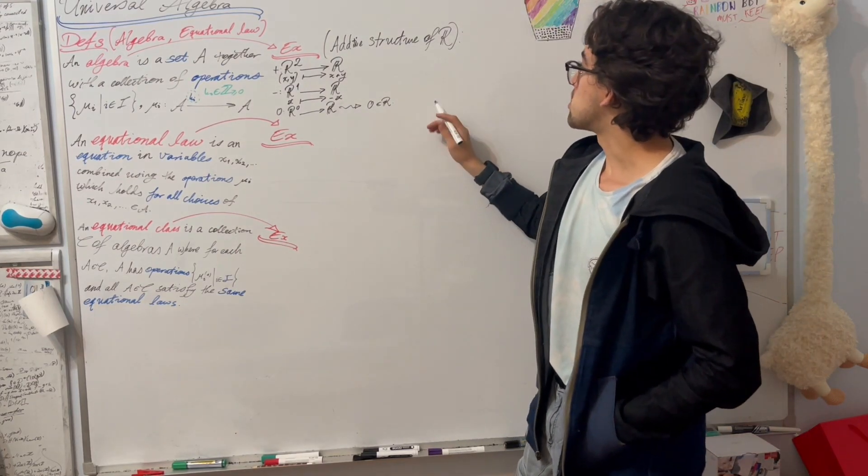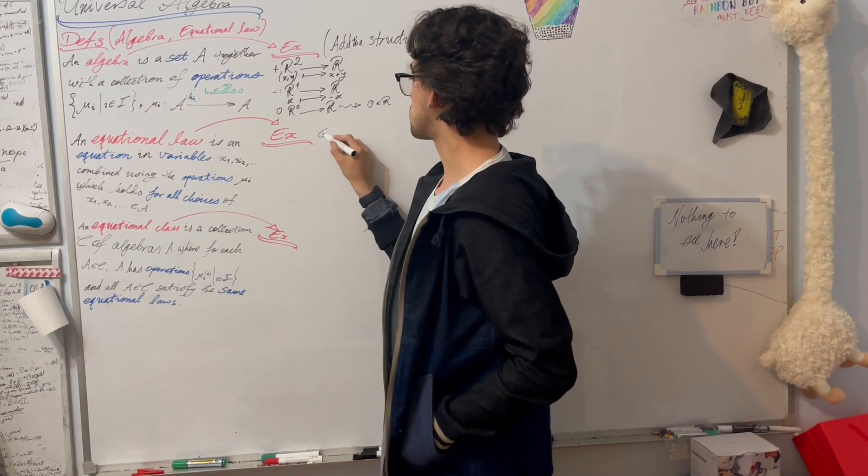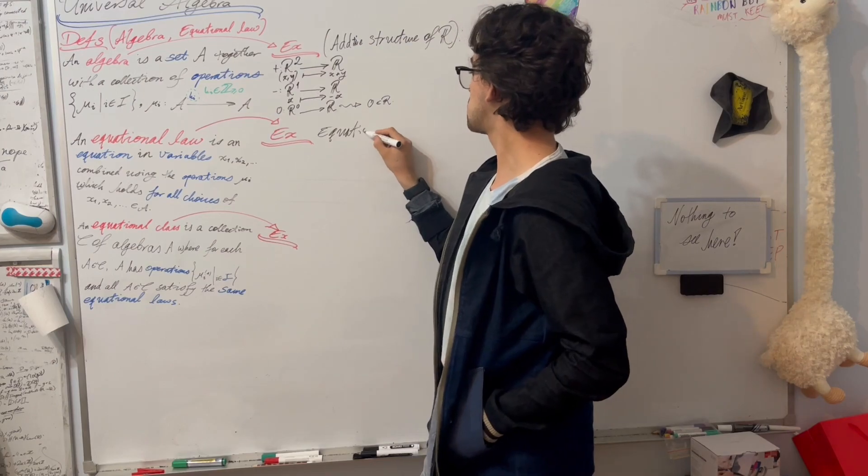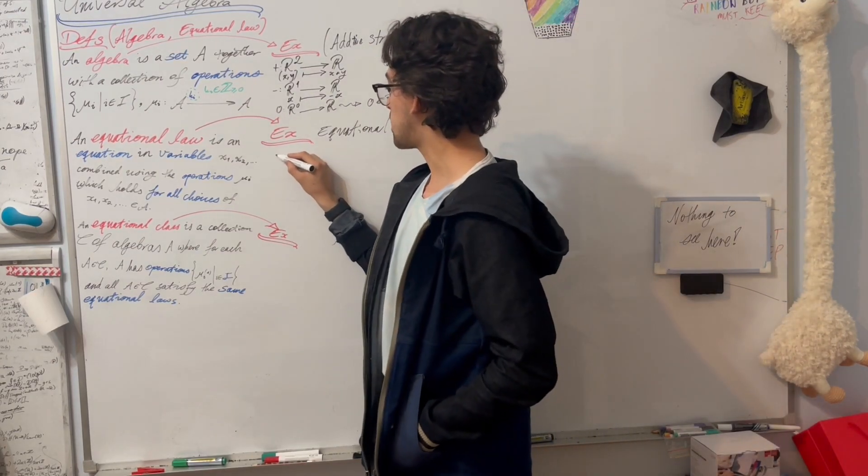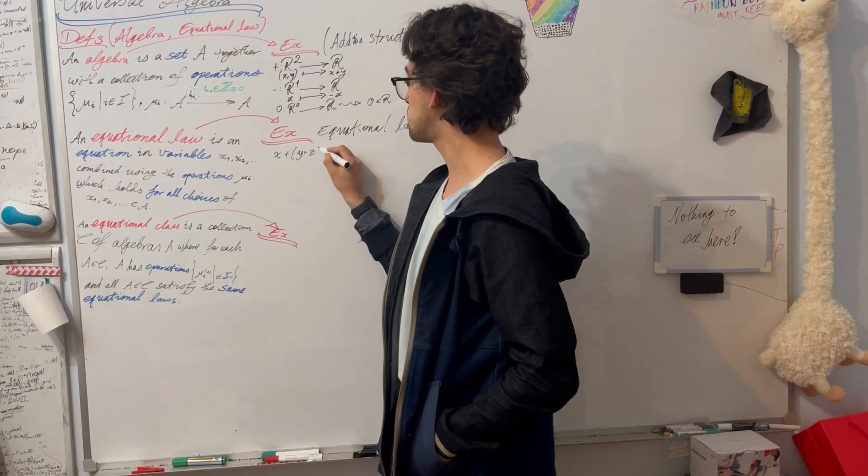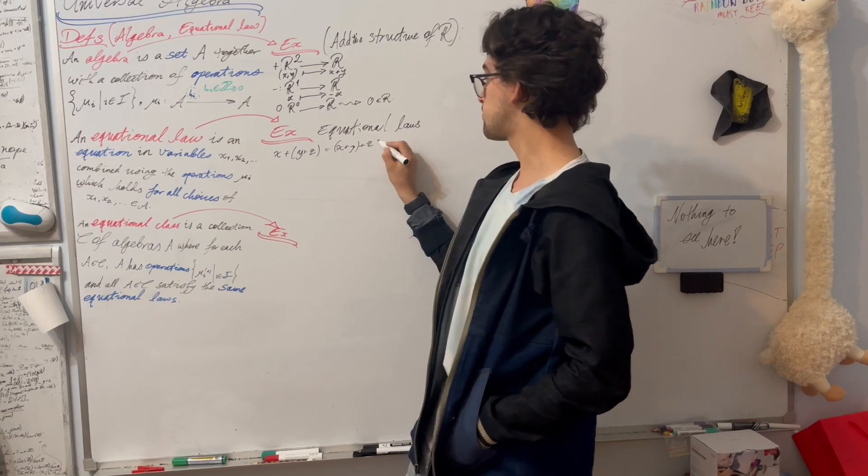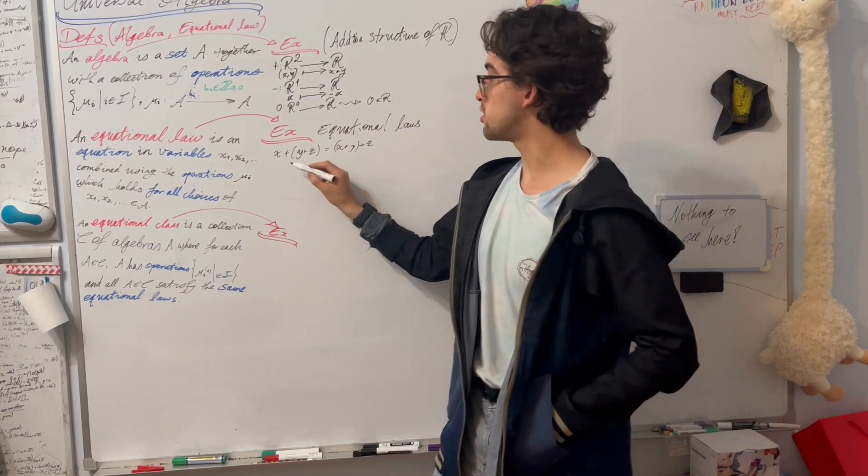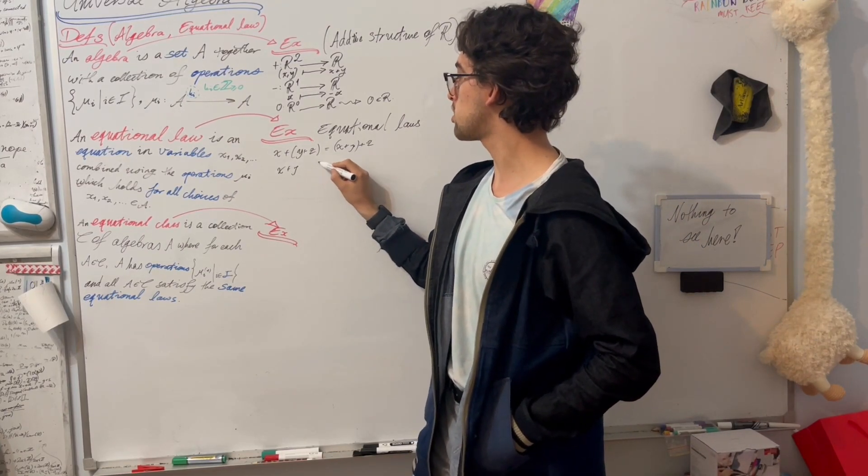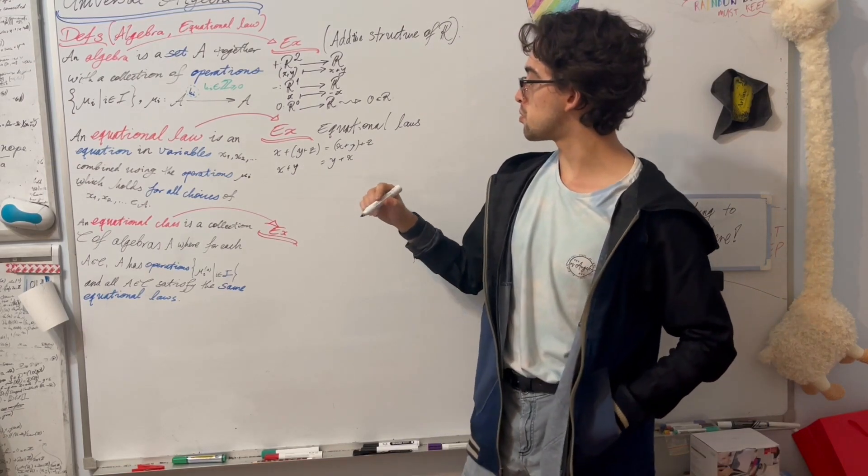So as an example, continuing the same additive structure example, we have equational laws. We have the associativity law, x plus (y plus z) is going to be (x plus y) plus z. We also have the commutative law, x plus y is y plus x.